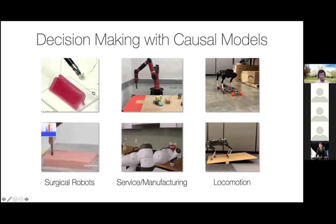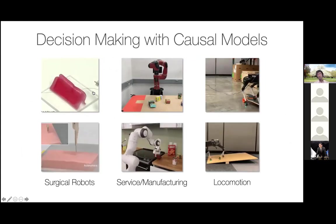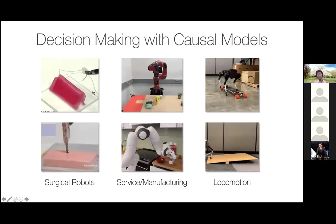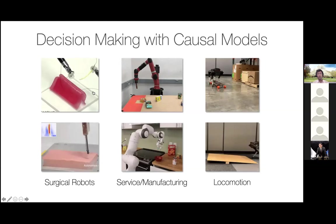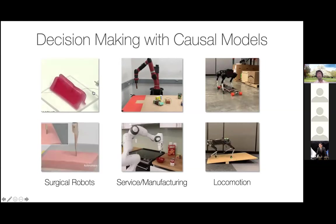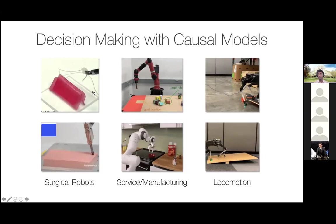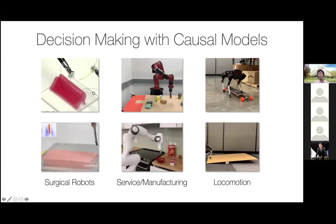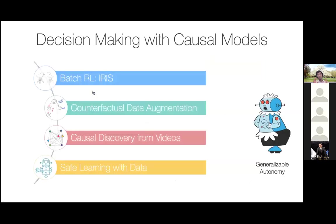Over the years, my work has been motivated by, evaluated on, and applied to different domains. I started in surgical robotics, worked with robot arms in service and manufacturing setups, and recently been working on legged locomotion in even and uneven terrains. Today I'm primarily talking about algorithms, covering three main things: how to learn from data, how causality shows up when learning from data, and how to close this loop to build practical systems.